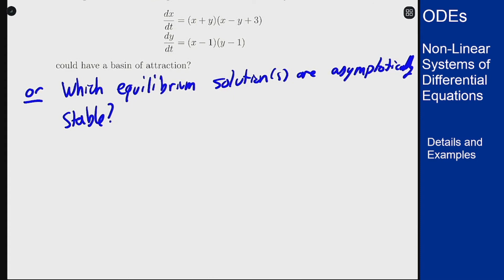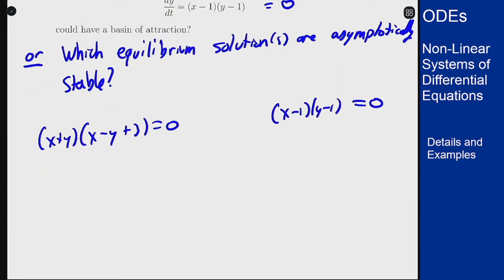First we want to find them, which means I want both of these to be zero at the same time. So I want x plus y, x minus y plus 3 equals 0, and x minus 1, y minus 1 equals 0. So over here I get either x is 1 or y is 1. Over here x equals minus y or y equals x plus 3.